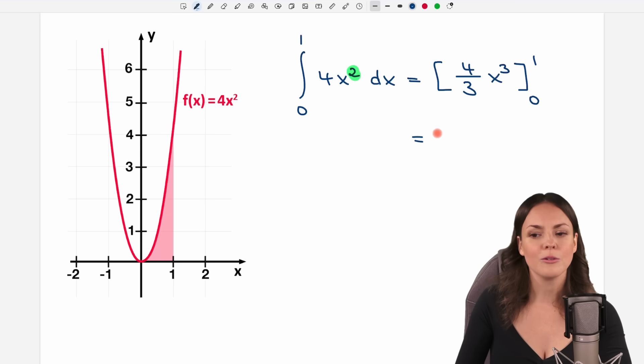Now I only have to insert the limits. I start with the upper limit and insert for every x that I have in here my 1. So for this x, I'm going to insert the 1 so that I have 4/3 times 1 to the power of 3. Then I'm done with my upper limit.